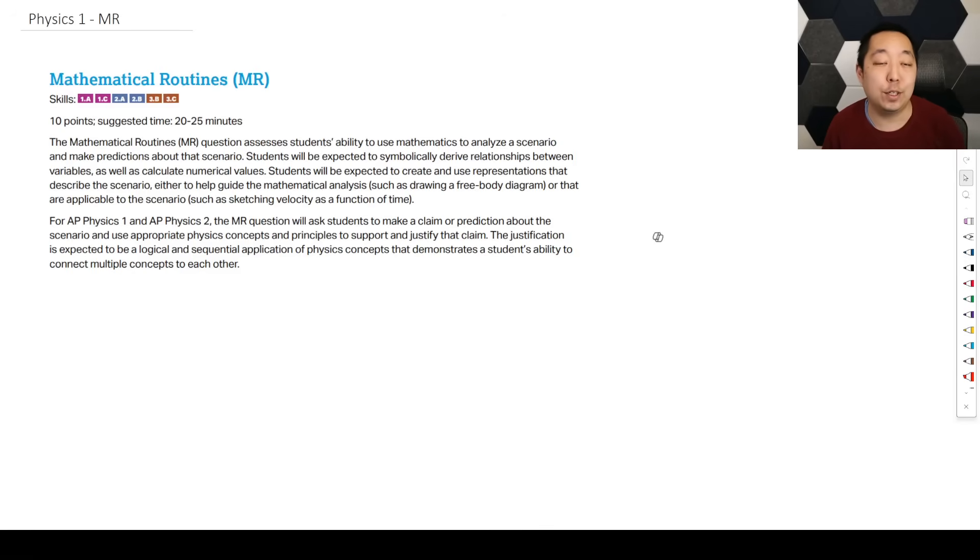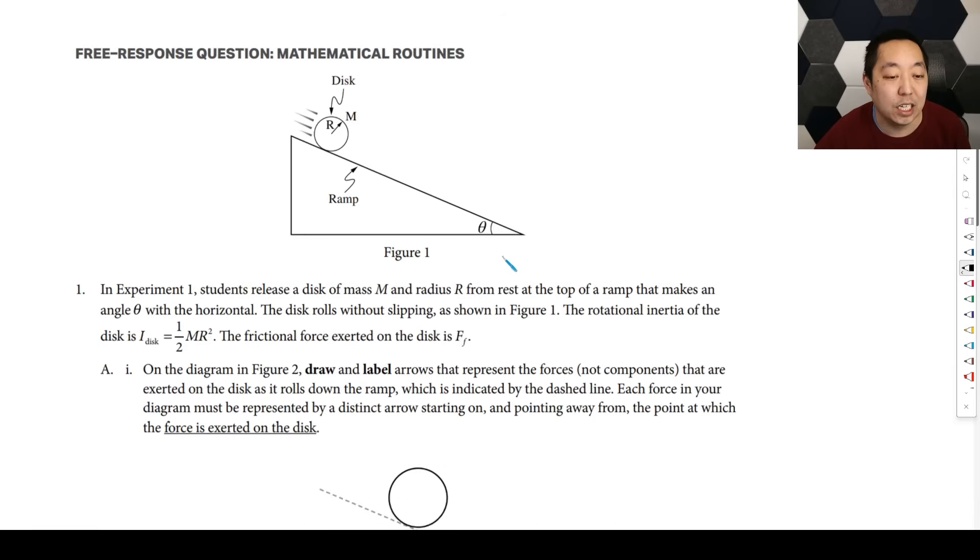Alright, so the first FRQ you run into on AP Physics 1 is going to be the Mathematical Routines FRQ. This is a pretty standard one. This would be mostly derivation analysis, probably the closest to a textbook problem that you'll run into. You may draw a free body diagram, you may justify something, but generally you're going to use principles, you may justify a claim, a little bit of stuff. But the primary part is just make sure you can correctly analyze a scenario mathematically.